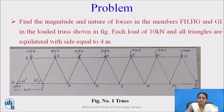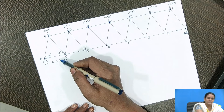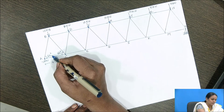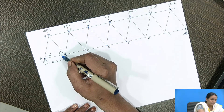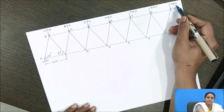If we go through the method of joint, we would have to start from joint A, and it will be a long process to find the forces only in these three members. So to avoid the method of joint, we will use the method of section to find only the forces in these members. It is an equilateral triangle, so the inclination is 60 degrees, and at each joint a 10 kilo newton force is acting.